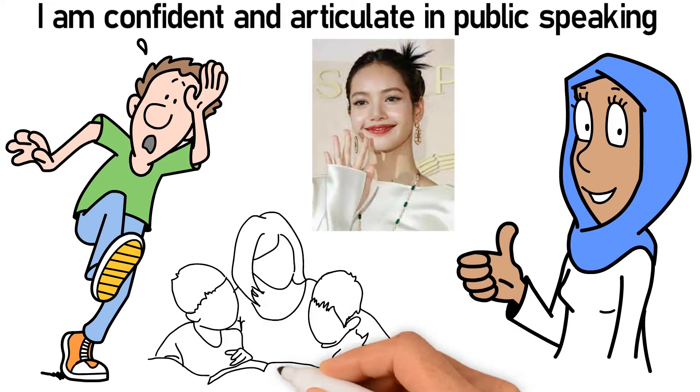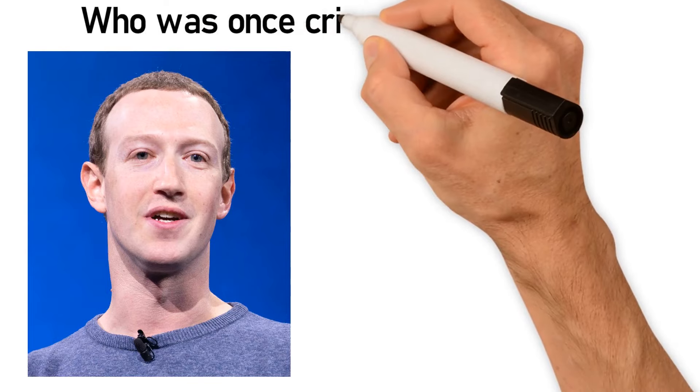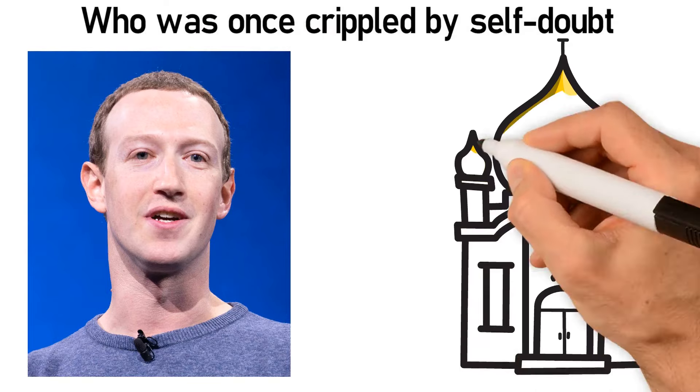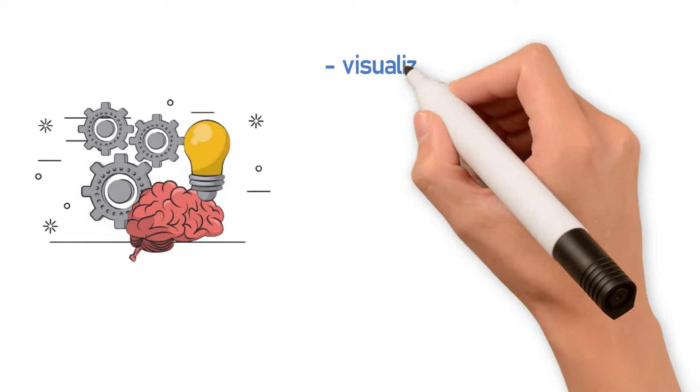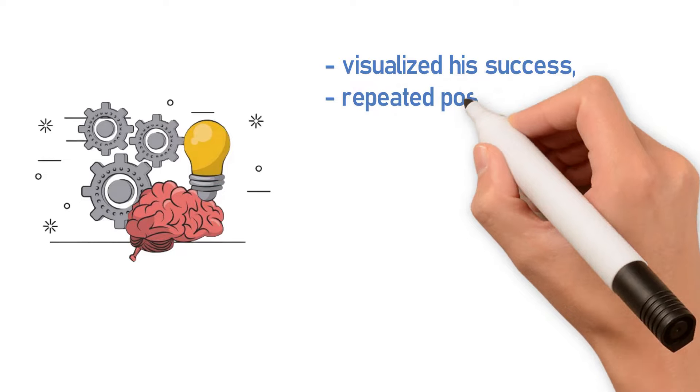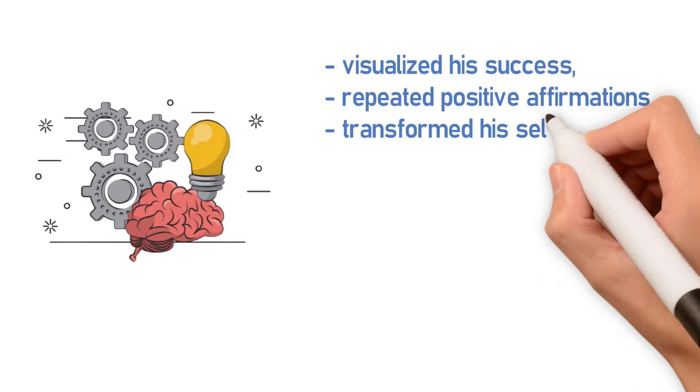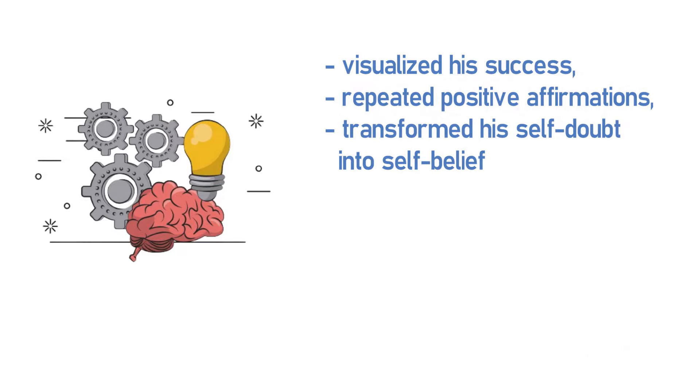Another compelling story is of a successful entrepreneur, Mark, who was once crippled by self-doubt and negative beliefs about his capabilities. Mark embraced the principles of subconscious mind power. He visualized his success, repeated positive affirmations, and transformed his self-doubt into self-belief.